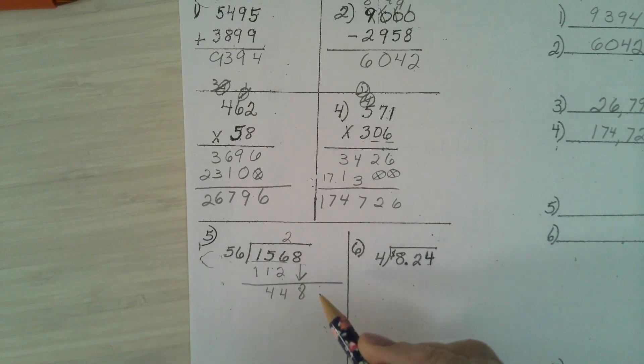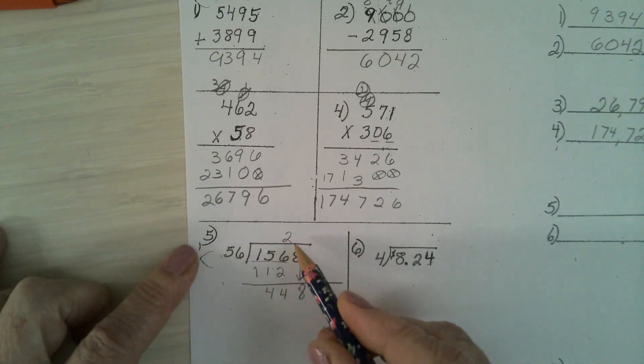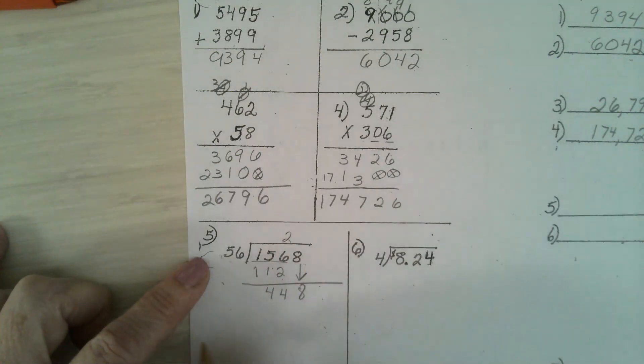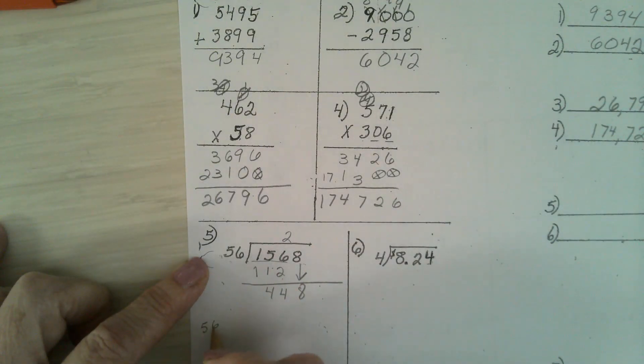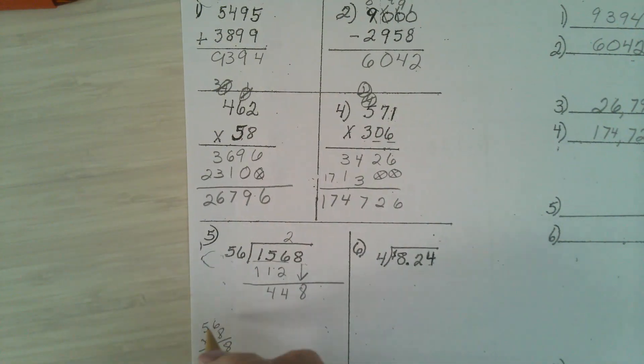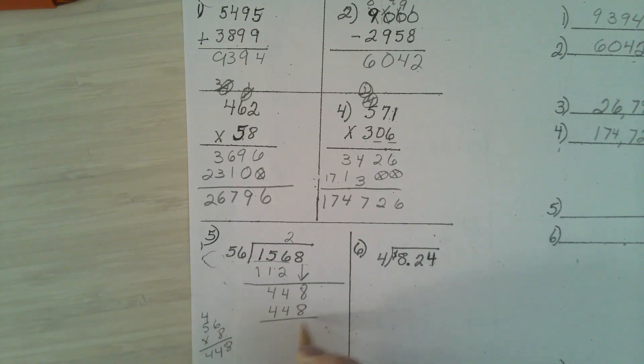How many 56's will go into that? I know it's going to be more than 2. I'm going to try 8. 56 times 8. 6 times 8 is 48, put down an 8, carry a 4. 40 plus 4 is 44. It works perfectly. The answer is 28. Any questions?